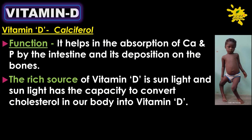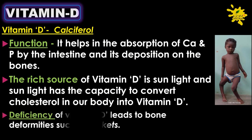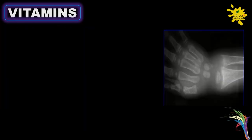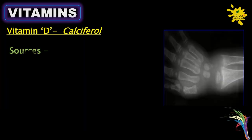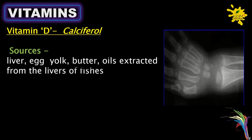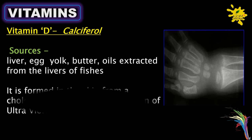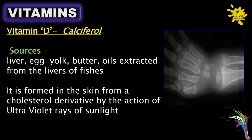Deficiency of Vitamin D leads to bone deformities such as rickets. Sources of Vitamin D include liver, egg yolk, butter, and oils extracted from the liver of fishes. It is also formed in the skin from a cholesterol derivative by the action of ultraviolet rays of sunlight.